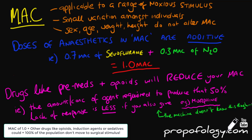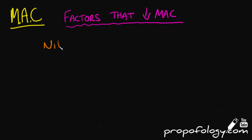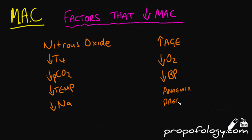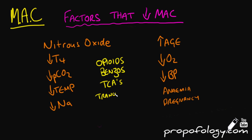Let's talk about the factors that decrease your MAC. Nitrous oxide will decrease your MAC. Hypothyroidism or myxedema will decrease your MAC. Hypocapnia, hypothermia, and hyponatremia also decrease it. Increasing age is a factor — a MAC of halothane at less than 3 months is around 1.1, whereas at greater than 60 years it is 0.64. Hypoxemia, hypotension, anaemia, and pregnancy all decrease your MAC. CNS depressant drugs like opioids, benzodiazepines, major tranquilizers, and tricyclic antidepressants also decrease your MAC.